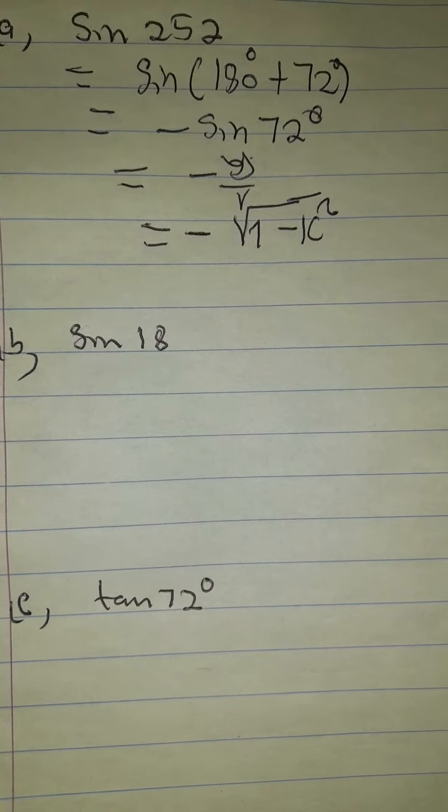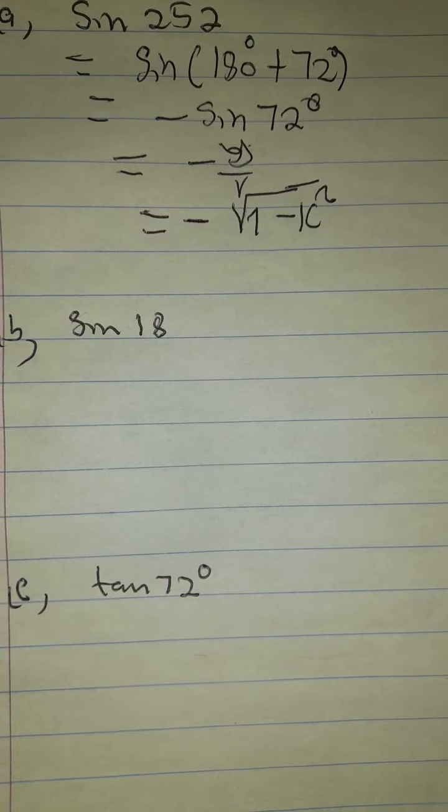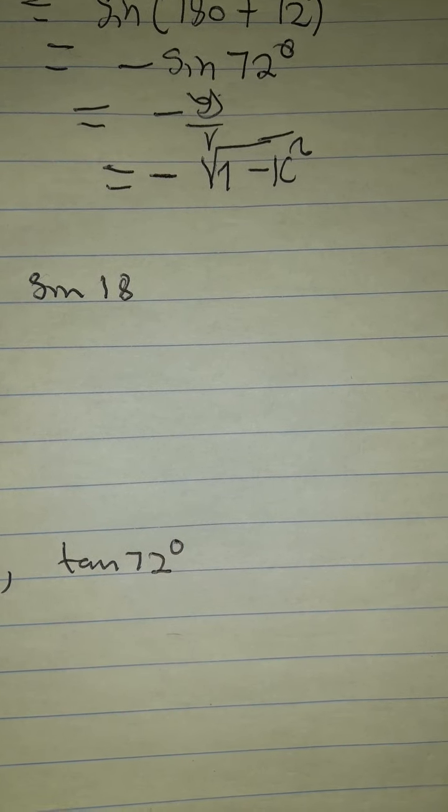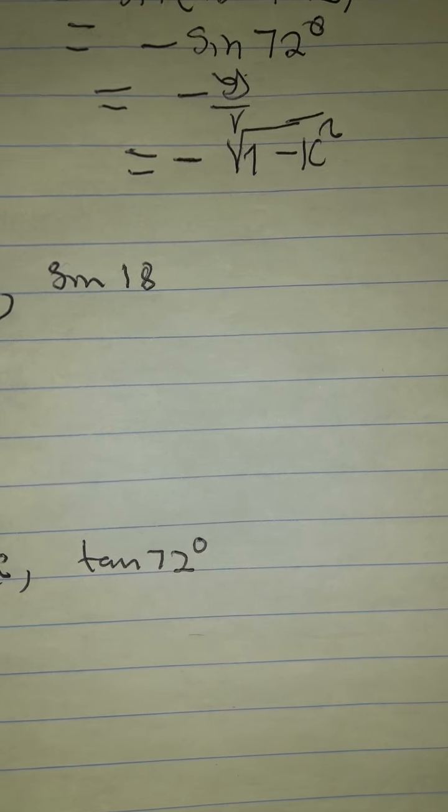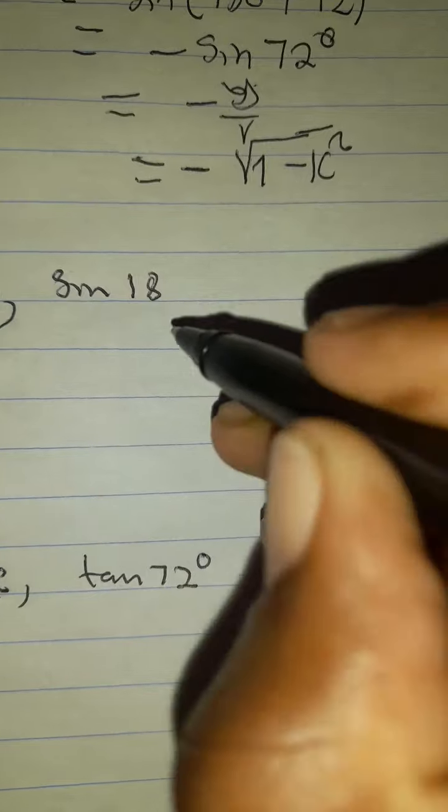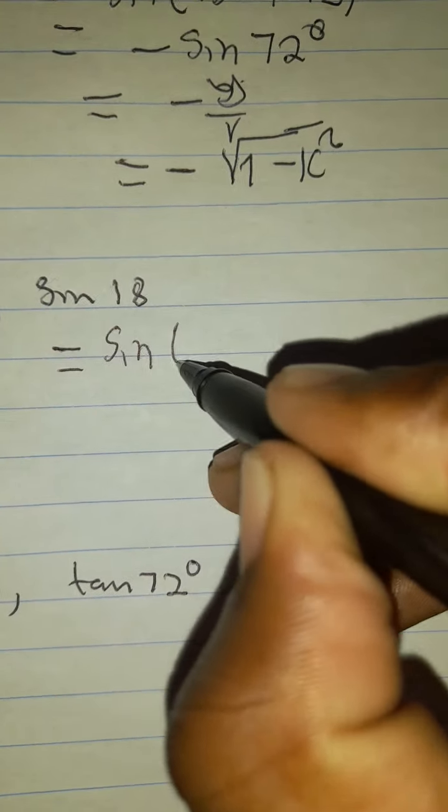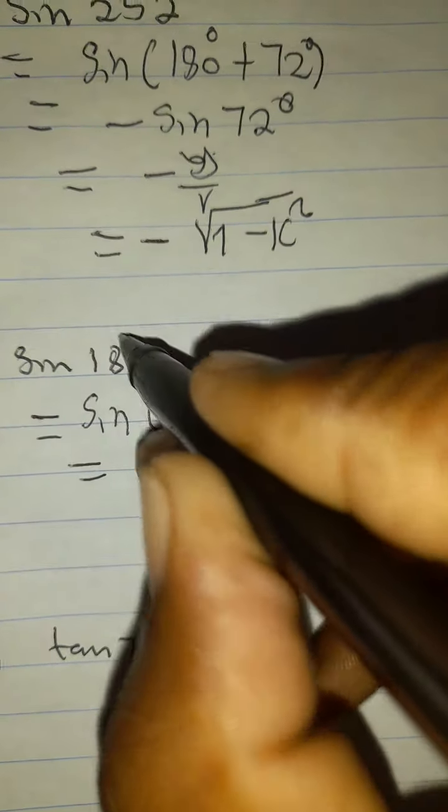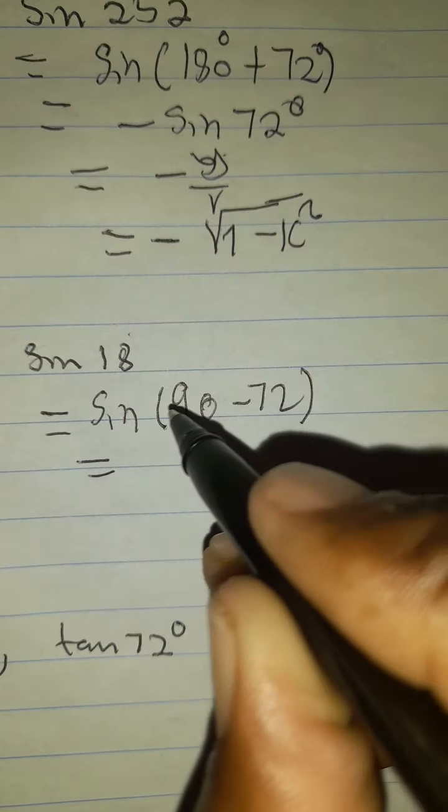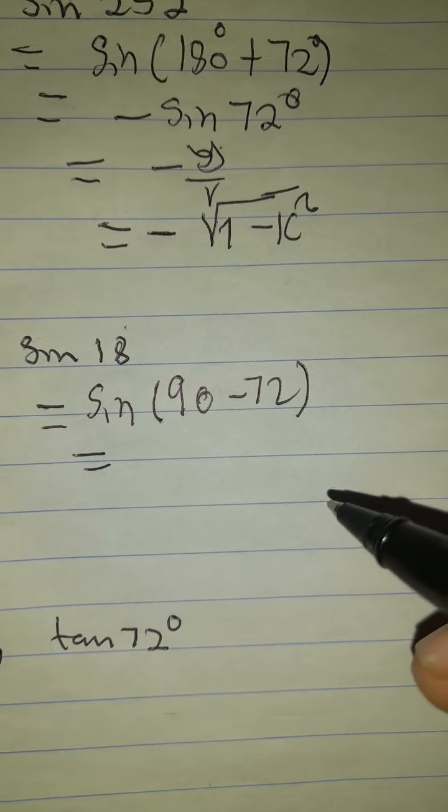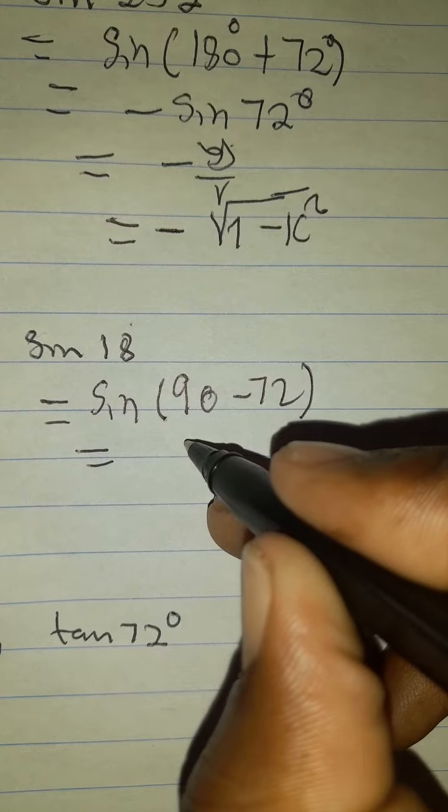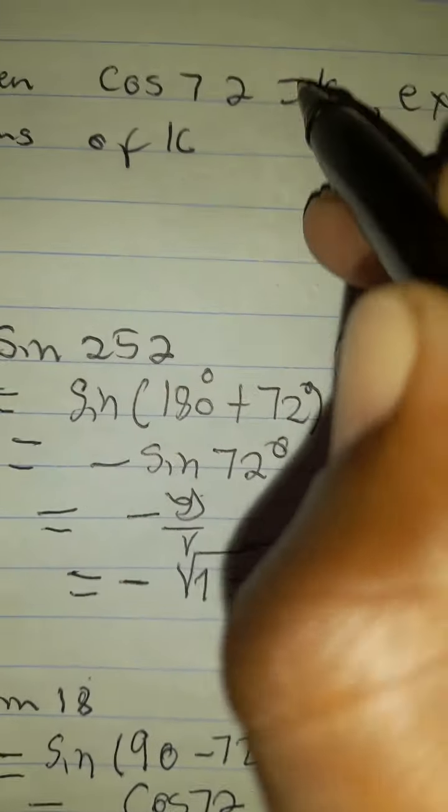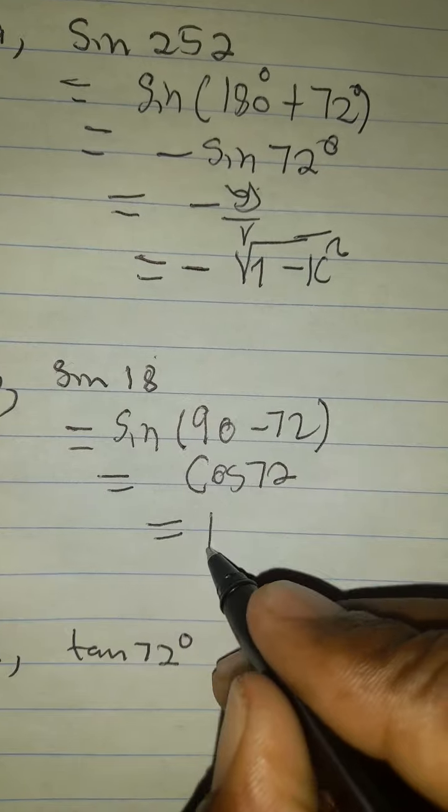At B, we are given sine 18. We have to reduce this. How can it give you 72? Remember I told you that you can use co-functions. Just say 90 minus 72, which gives you 18. So sine 90 minus 72, which will give you 18. This is the first quadrant where sine is positive. It's a co-function, so it will change to cos. So we are going to have cos 72. We were given cos 72 as K. Then you just place K here.